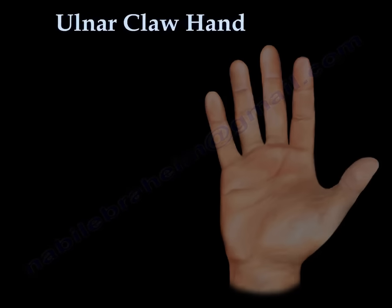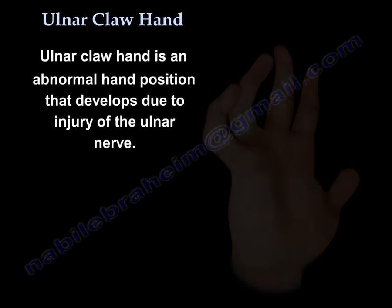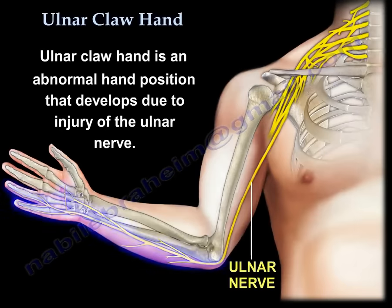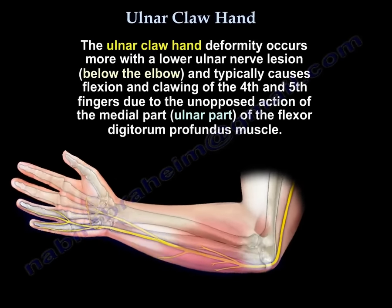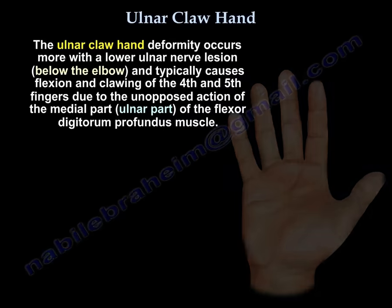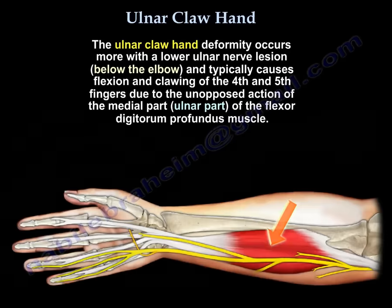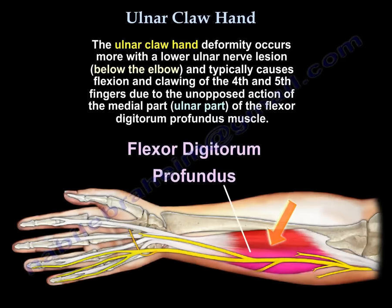Claw hand, also called ulnar claw hand, is an abnormal position that develops due to injury of the ulnar nerve. The claw hand occurs more with a low ulnar nerve lesion, typically causing flexion and clawing of the fourth and fifth fingers due to the unopposed action of the medial or ulnar part of the flexor digitorum profundus muscle.